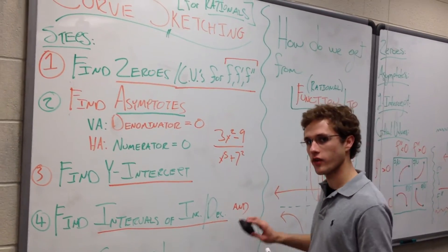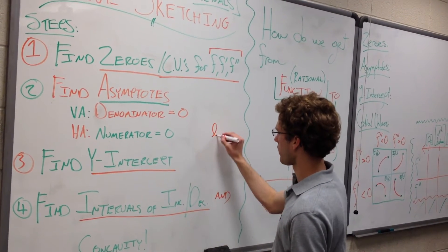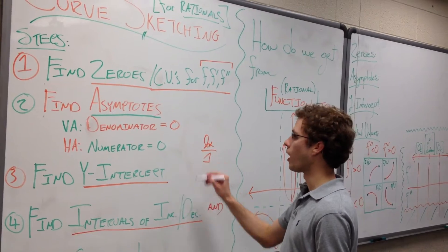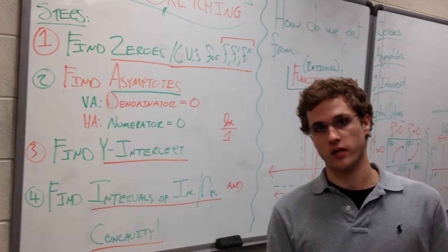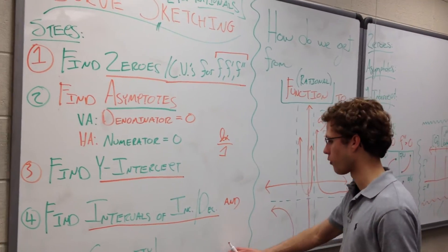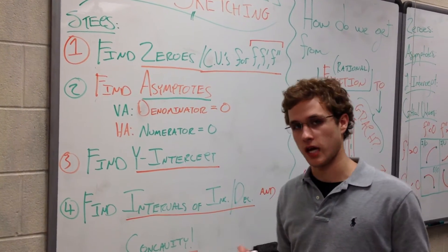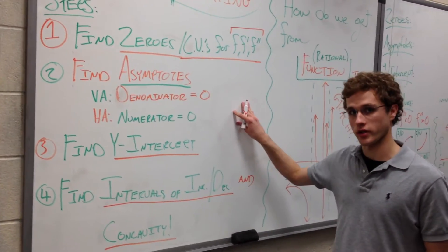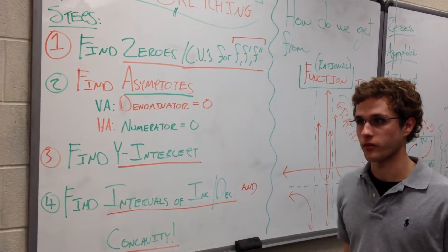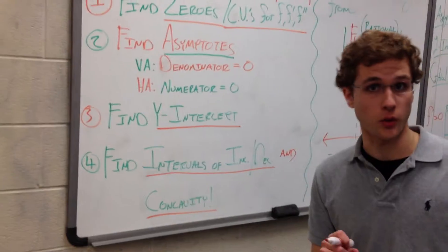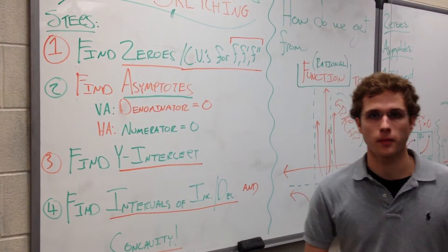You might think: isn't every single function a rational function? Because we could just take ln(x) and put it over 1, and it's a quotient. Yes, all functions are technically rational functions because you can just put them over 1. But we're ignoring that technicality for this video. We're talking about the type where the denominator does not equal 1 — two distinct values over each other.